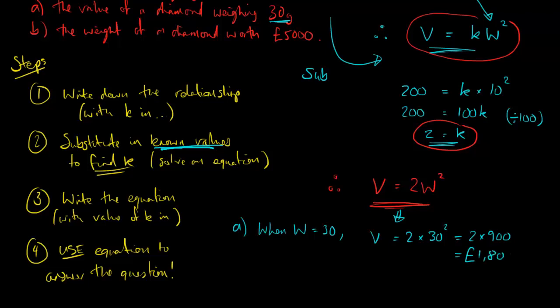So in this case 2 times 30 squared and so that's 2 times 900 which comes to 1,800. And it's a value in pounds so make sure you put the pound sign. So far so good. Part b, it wants the weight of a diamond which is worth 5,000 pounds.